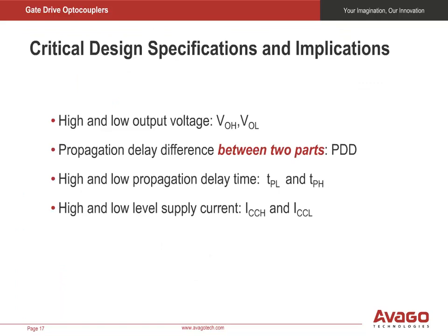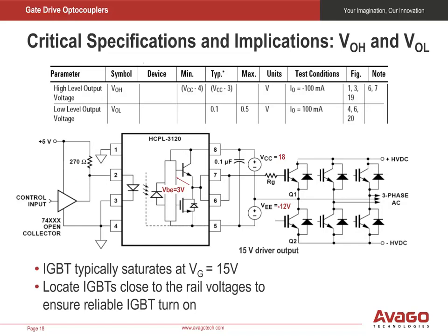Let's now look at the specifications you as a designer must be aware of and the implications for your design. We'll talk about output voltage level, propagation delay difference between two different parts, propagation delay time, and finally supply current. Darlington transistor output stages give more driving current, but the drawback is that the gate driver's output voltage during turn-on is not very close to the VCC level. The voltage drop due to a Darlington output stage is typically 3 volts, and it can go up to even 4 volts.